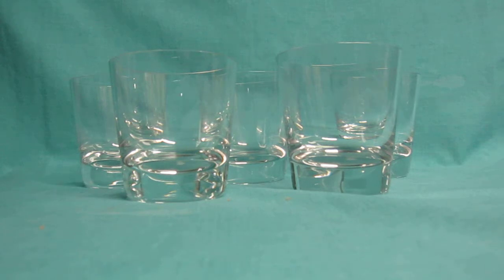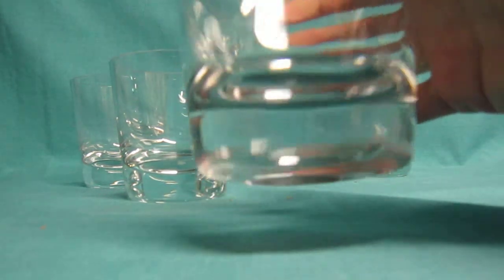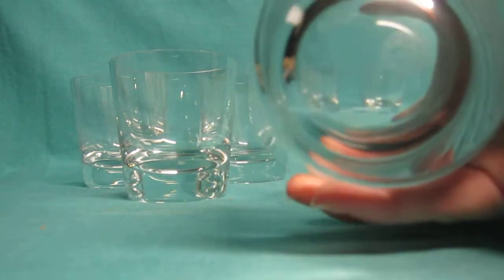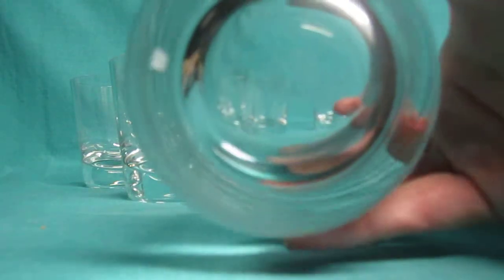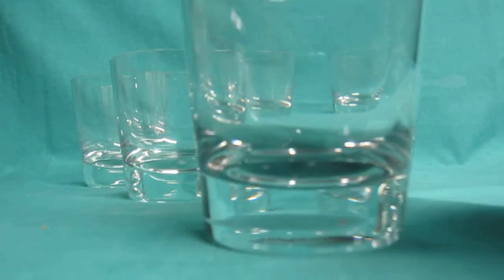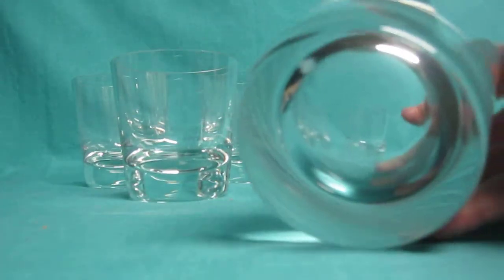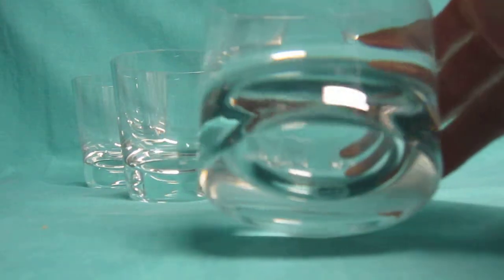These glasses have a thick bottom, heavy-duty crystal. Hopefully you can see here the Baccarat stamp on the bottom. Sometimes it doesn't show up really well in the camera, but if you look at the pictures on the eBay listing, you'll be able to see that stamp.